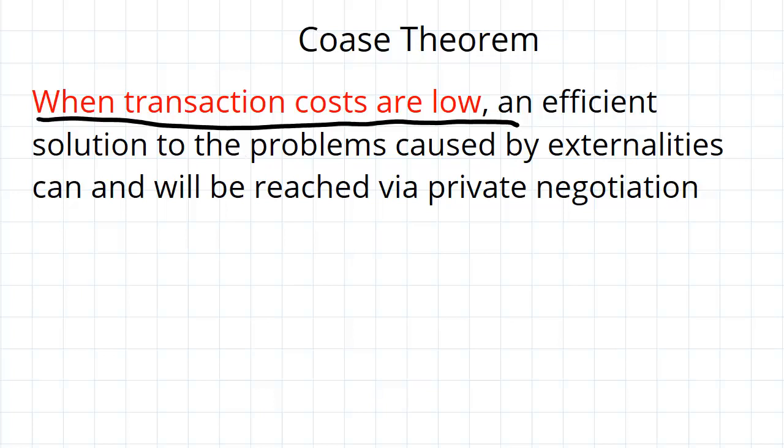The main point of Coase theorem is not so much that this process does occur, but rather that it occurring depends on transaction costs. What is meant by that is the costs that are incurred in the actual process of negotiating.